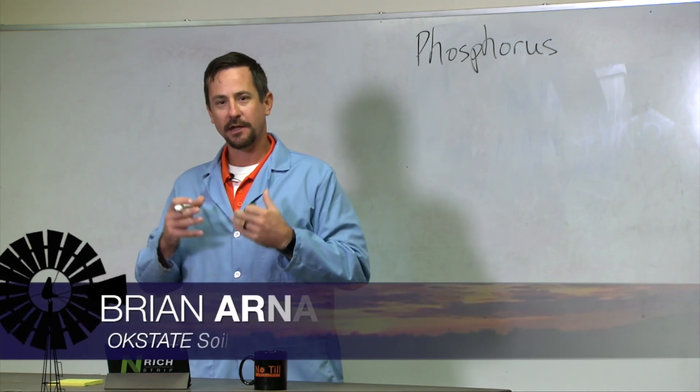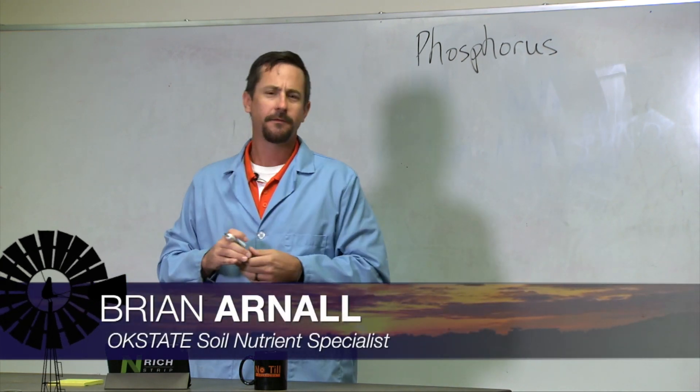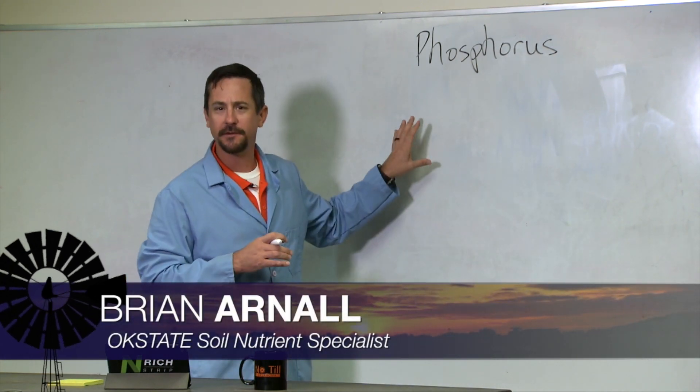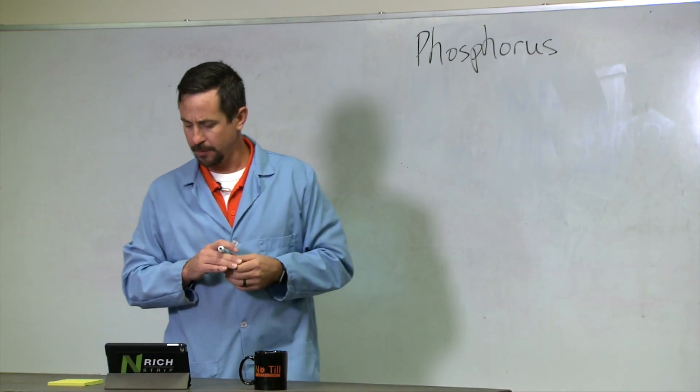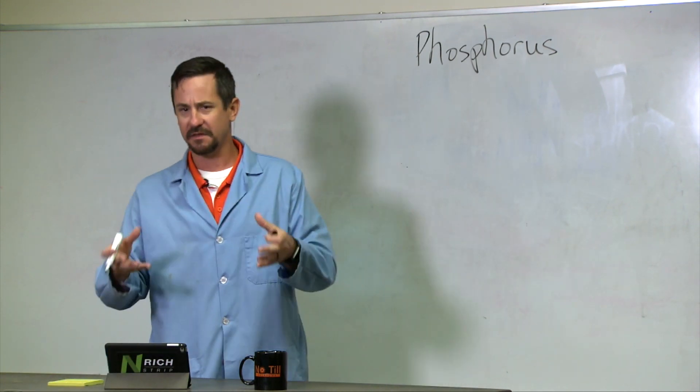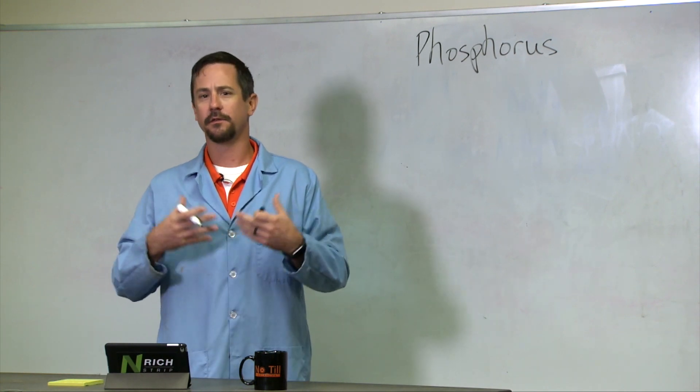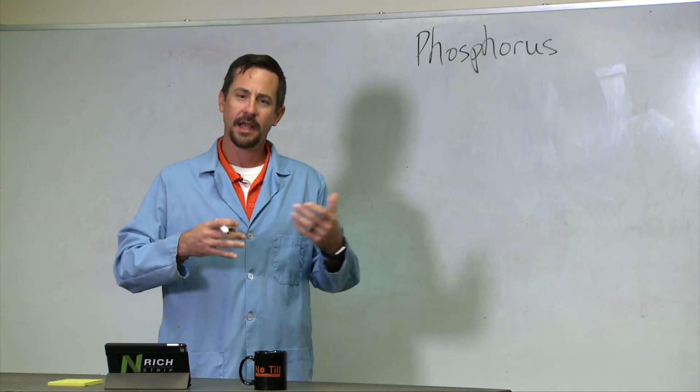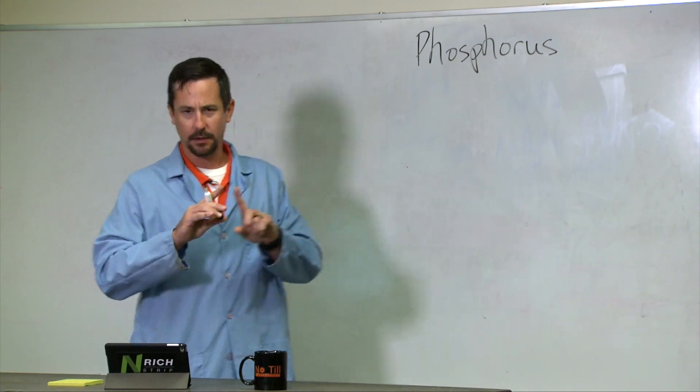Of our macronutrients—nitrogen, phosphorus, and potassium—phosphorus is typically the second most deficient nutrient in Oklahoma. As I talk about managing phosphorus, sometimes I go beyond the basics of what phosphorus does, why it's important in the plant, and how we manage it.